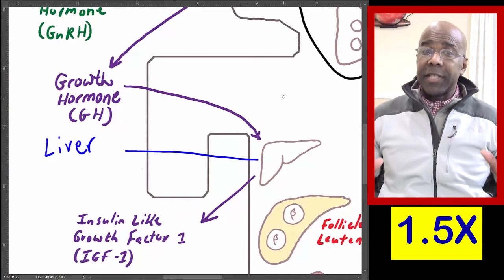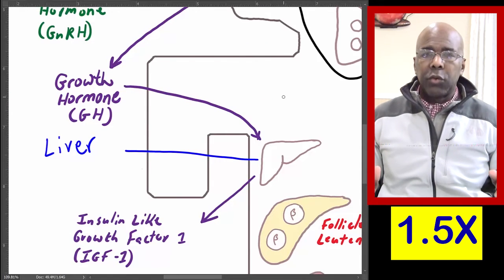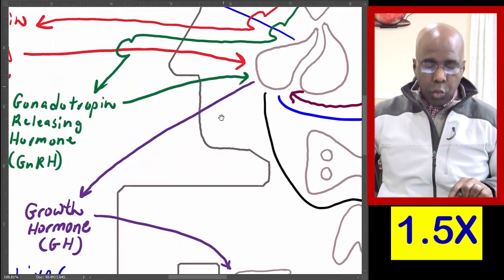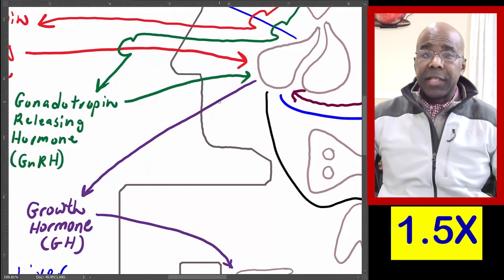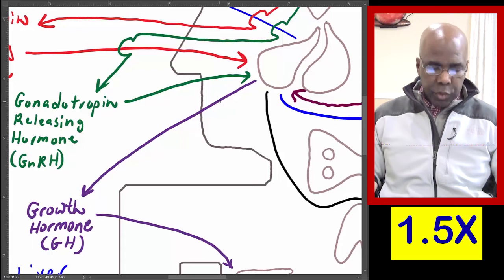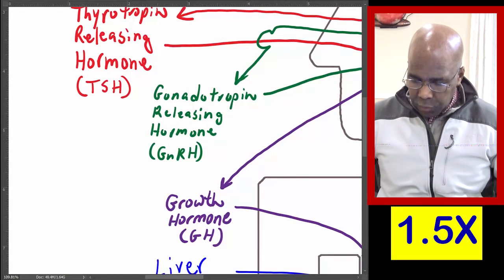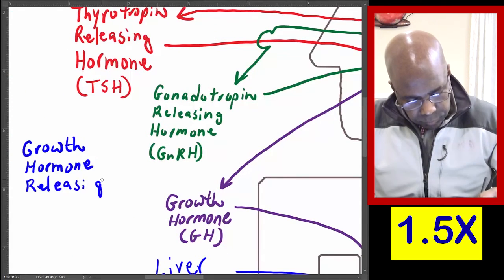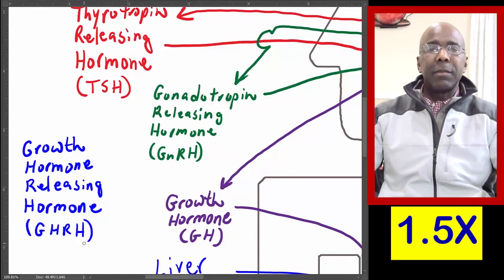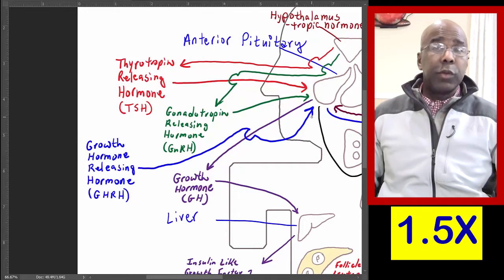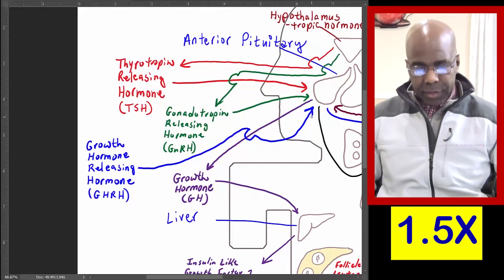Our last structure was the liver. The liver secretes insulin-like growth factor, which causes muscle and bone growth. Growth hormone stimulates the liver to secrete IGF-1. Growth hormone is secreted by the anterior pituitary. There is a hormone that stimulates the anterior pituitary to release growth hormone, and that hormone is growth hormone-releasing hormone. Growth hormone-releasing hormone stimulates the anterior pituitary to release growth hormone, and it is secreted by the hypothalamus.